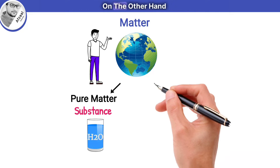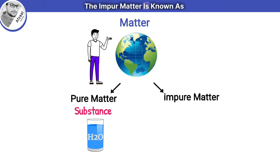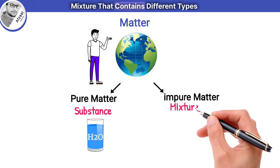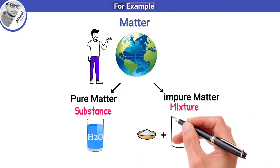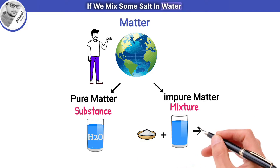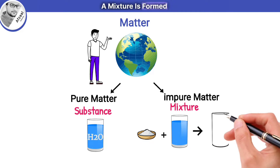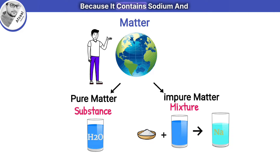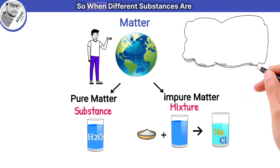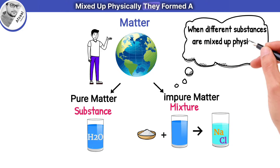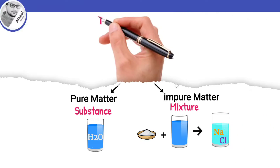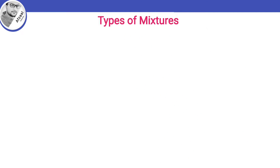On the other hand, impure matter is known as a mixture — it contains different types of particles. For example, if we mix some salt in water, a mixture is formed because it contains sodium and chloride particles other than water molecules. So when different substances are mixed up physically, they form a mixture.